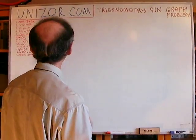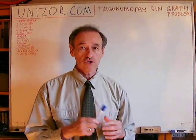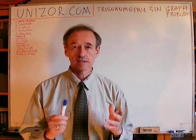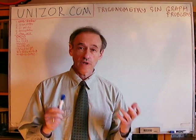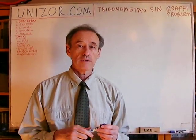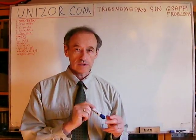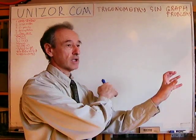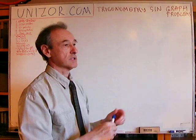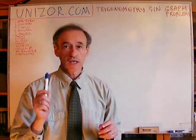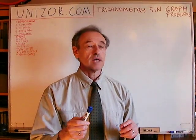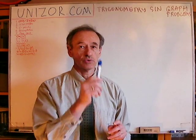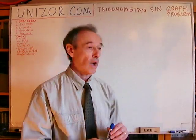Even functions like cosine do not change the value if the argument changes sign. Next is symmetry. If the function is odd, then the graph is centrally symmetrical relative to the origin — like turning by 180 degrees. If the function is even, like cosine, then it has reflective symmetry relative to the vertical axis, the y-axis.